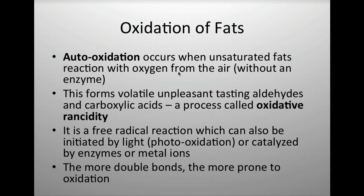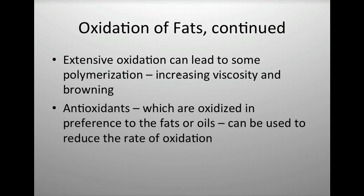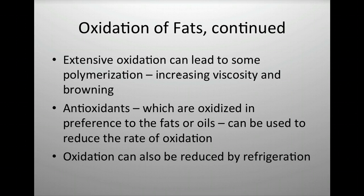So even though more double bonds are healthier for our body, they don't have a very long shelf life. Extensive oxidation can lead to polymerization, which makes things thicker — viscosity is resistance to flow — and they can turn funky colors like brown, which is a clue your food may be going bad. Antioxidants will be oxidized instead of the fats or oil; they can be added to foods to reduce the oxidation rate. Oxidation can also be slowed simply by refrigerating, since lowering the temperature slows the reaction rate.